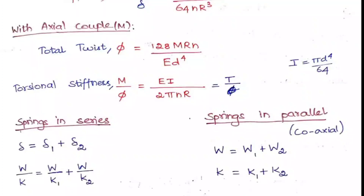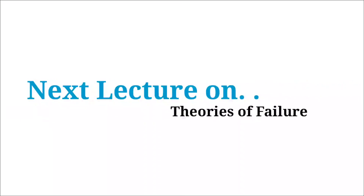For springs in parallel — also called coaxially connected springs — the deflection is the same in all springs but the load differs. The total load equals the sum of loads in each spring: W = W₁ + W₂, and the total stiffness is K = K₁ + K₂. That is the key difference between series and parallel spring connections.